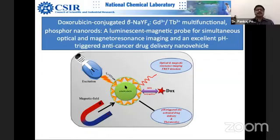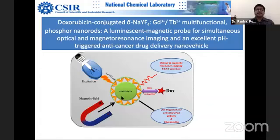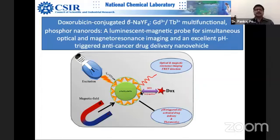This phosphor was modified in such a way that you excite it at 273 nanometers and there is an emission. It also has gadolinium doping, so it has paramagnetic ions — not ferromagnetic or antiferromagnetic, just dilute paramagnetic impurities inside. With some chemistry steps, we designed this in such a way that we could tag doxorubicin on top of it.